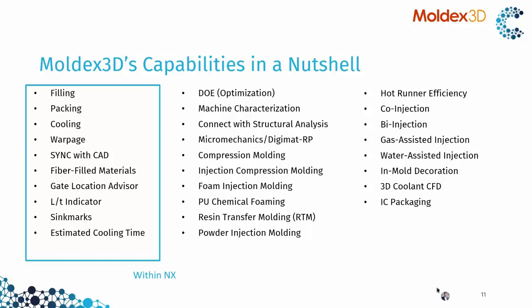In the standard version, we provide even more, like DOE for optimization, connection with structural analysis like NX Nastran with explorer properties and then continuing with applying loads or thermal analysis, micromechanics if necessary. And of course supporting various processes like compression molding, foaming, bi-injection, co-injection, and gas-assisted injection.